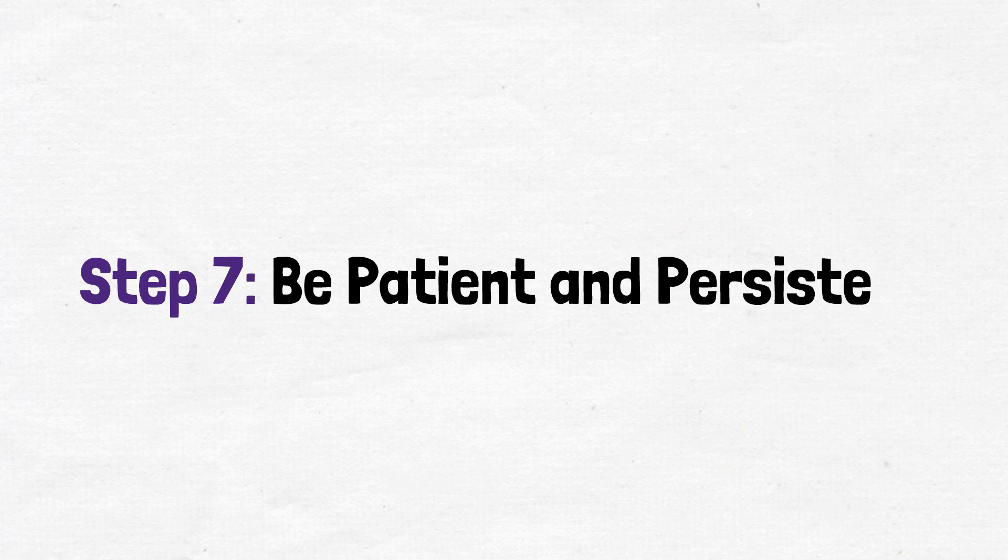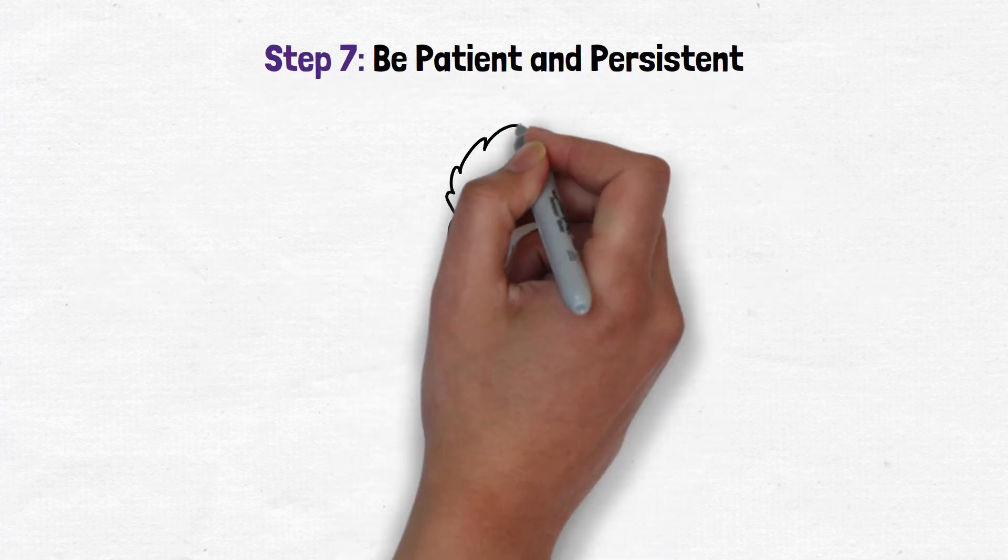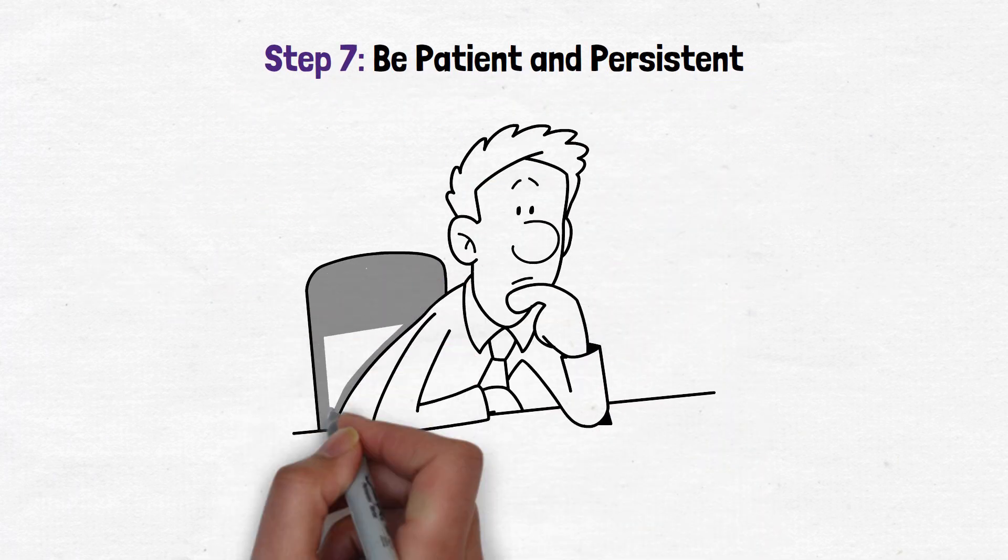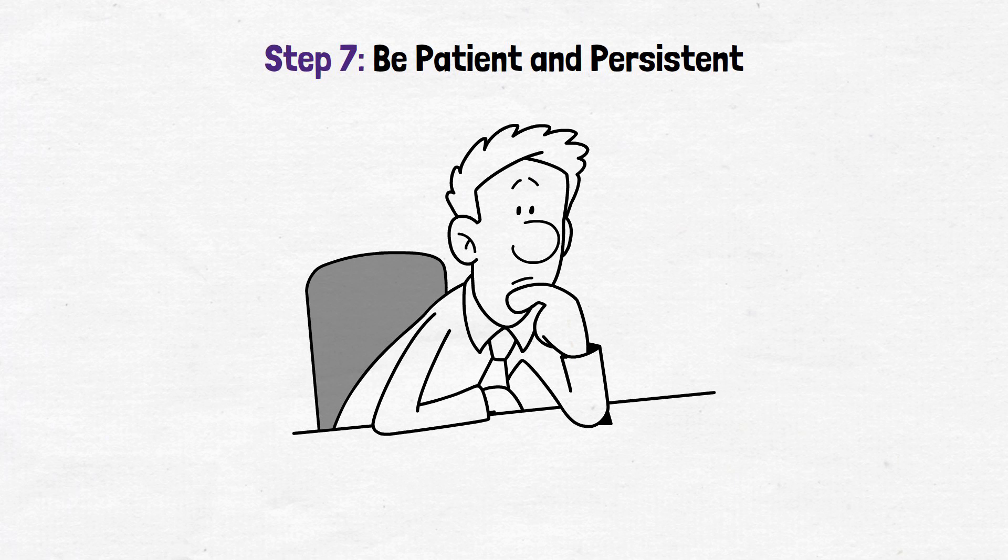Step 7: Be patient and persistent. Building credit takes time, and it's essential to be patient. Consistently practicing good credit habits and maintaining a positive credit history will gradually improve your credit score over time.